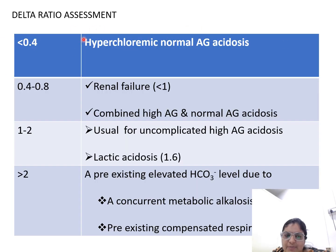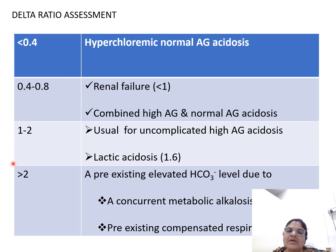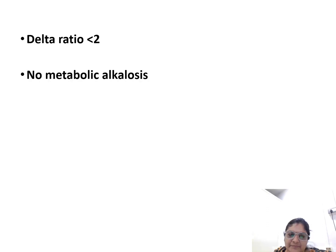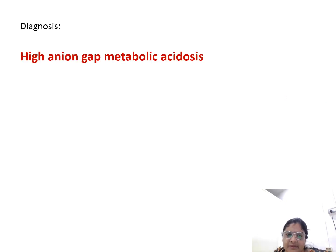Delta ratio interpretation: less than 0.4 indicates hyperchloremic normal anion gap acidosis; 0.4 to 0.8 suggests renal failure with combined high and normal anion gap acidosis; 0.8 to 1.2 is typical for uncomplicated high anion gap acidosis and lactic acidosis; greater than 2 indicates pre-existing elevated bicarbonate due to concurrent metabolic alkalosis or pre-existing compensated respiratory acidosis. Here the delta ratio of 0.86 means no additional metabolic alkalosis is present, confirming high anion gap metabolic acidosis.